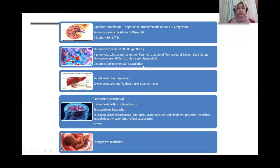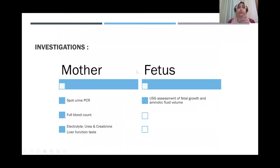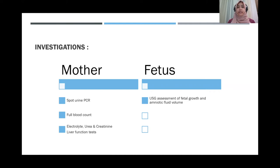If someone comes to your clinic with hypertension in pregnancy, you do investigations for both mother and baby. For the mother: office urine dipstick, spot urine PCR, full blood count looking for low counts or schistocytes, electrolytes, urea, creatinine, and liver function tests. For the baby, you can do an ultrasound to assess growth and amniotic fluid volume.